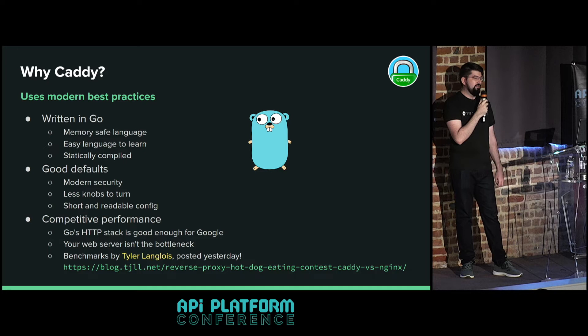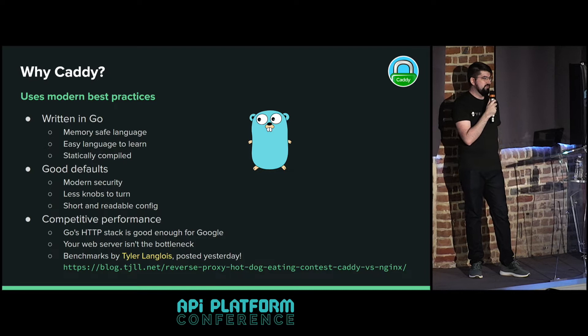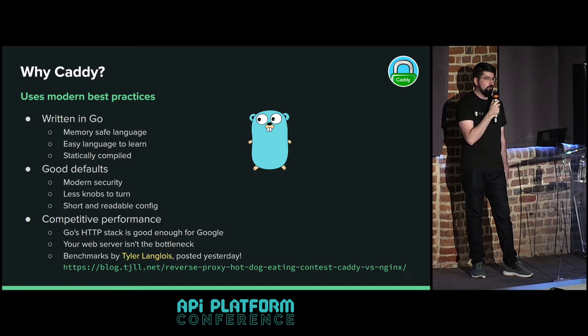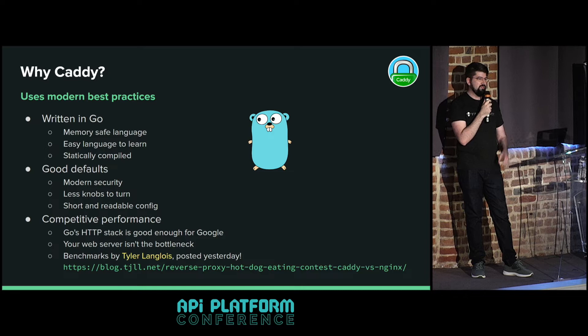Why would you use Caddy instead of another web server? One reason is that Caddy is written in Go, a memory safe language, which makes it immune to all kinds of patterns of security vulnerabilities. Other servers are typically written in C, which is not memory safe, so there's more risk of vulnerabilities. Go is easy to learn, so it's easy to contribute to Go projects if you want to write plugins or fix a bug. And it's statically compiled - a single binary with no dependencies outside of the program itself.